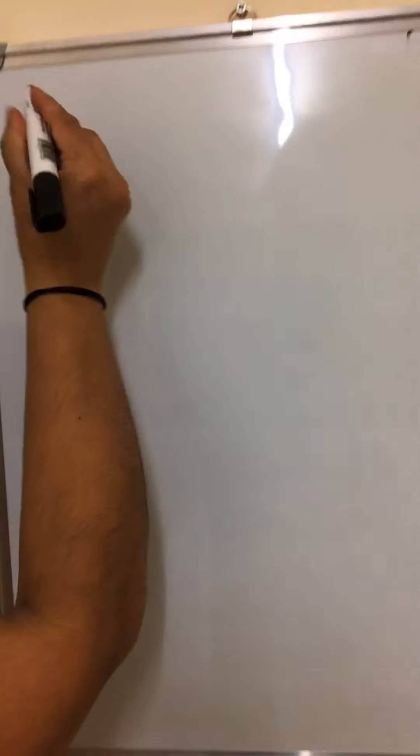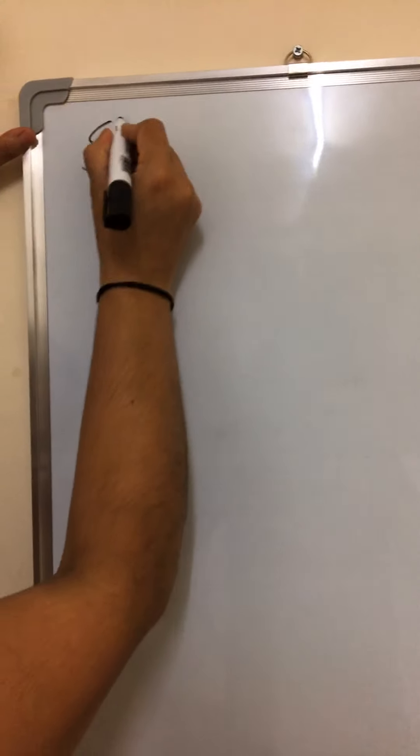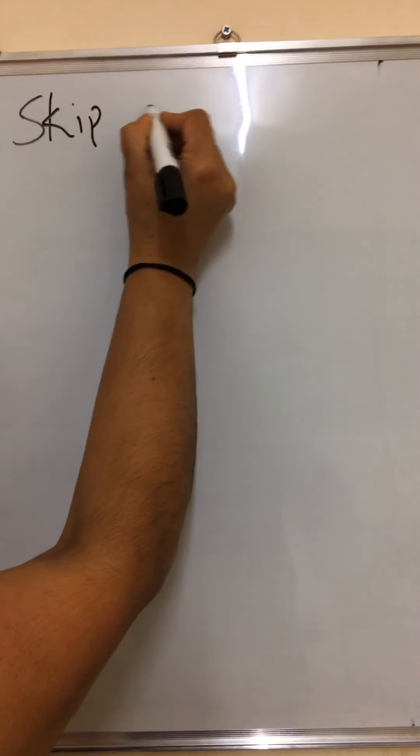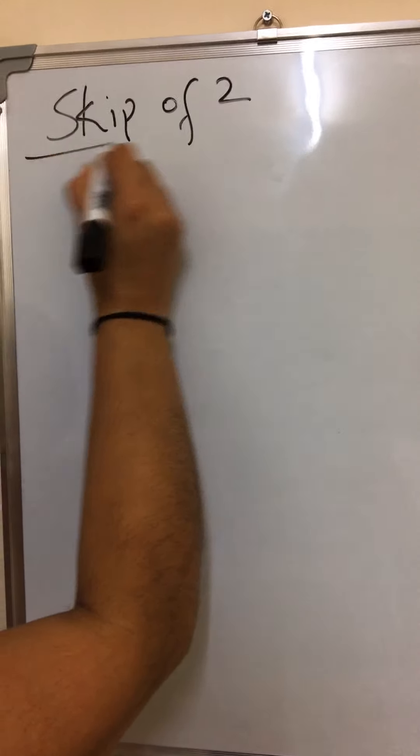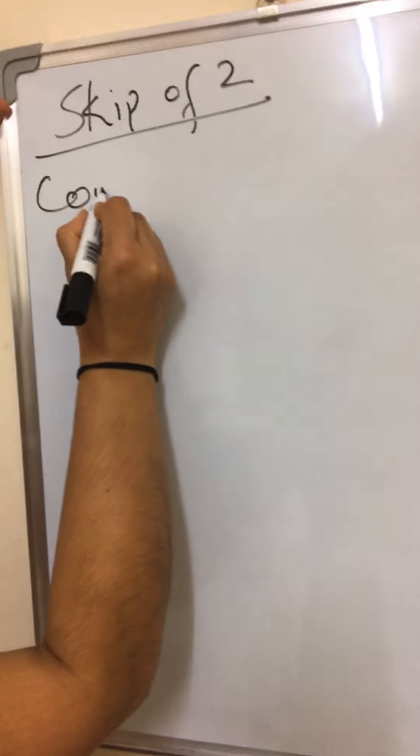Hello everyone, today we are going to learn about skip counting. Skip of two is still a timetable, but in this one we are just teaching or introducing the children just the answers. Skip of two means counting in twos.